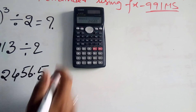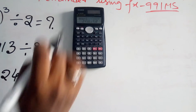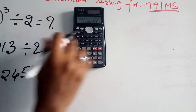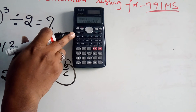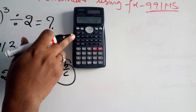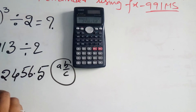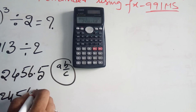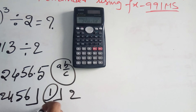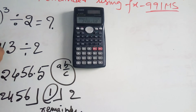After getting 2456.5, simply press the a b/c button. The display shows 2456 remainder 1 — meaning 1 is the remainder of 17 to the power 3 divided by 2. That is the first method.